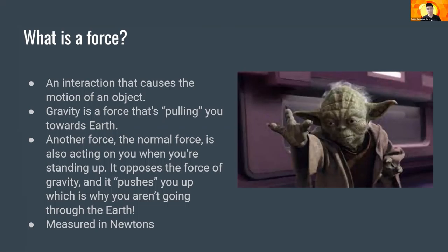One example of a force includes gravity — it's what keeps us all pulled towards the Earth. But if gravity is the only force being exerted on you, why aren't you falling through the Earth? That's because there's another force acting on your body, known as the normal force. It's what opposes the force of gravity and prevents you from falling through the Earth.